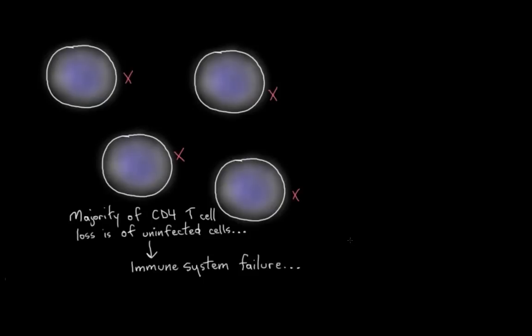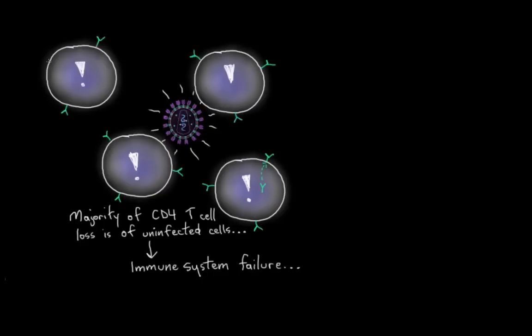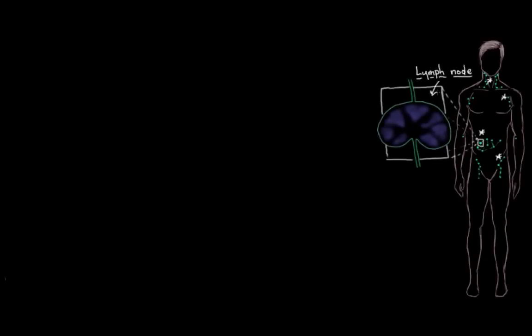So, part of why there's such a huge loss of these uninfected cells is because when T cells get exposed to HIV, even if they don't get infected by it, they start to produce this protein on their surface that causes them to hone in on our lymph nodes. They start to travel to our lymph nodes. And, the reason for this is because, remember, the lymph nodes are the areas in our immune system where our immune cells go to get exposed to new types of bacteria and other bugs that they're supposed to be fighting. They're kind of like training grounds for our immune cells.